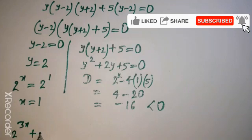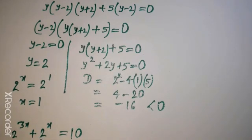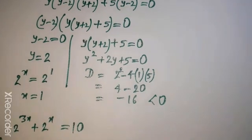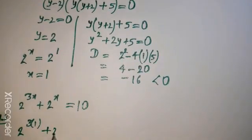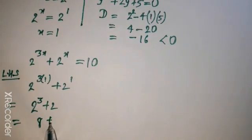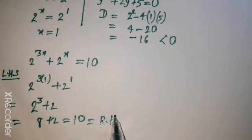Checking our equation 2 to the power 3x plus 2 to the power x equal to 10: putting x equal to 1 on the LHS gives 2 to the power 3 plus 2 to the power 1, that is 8 plus 2, which equals 10. This matches the RHS, so our value of x equal to 1 is confirmed.